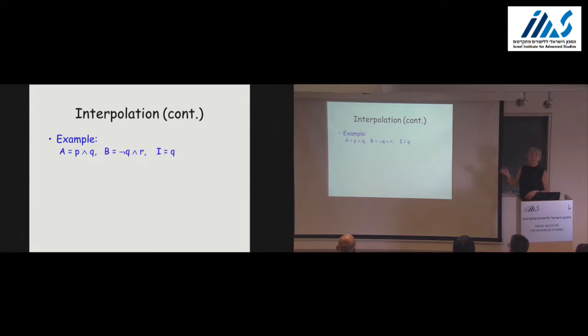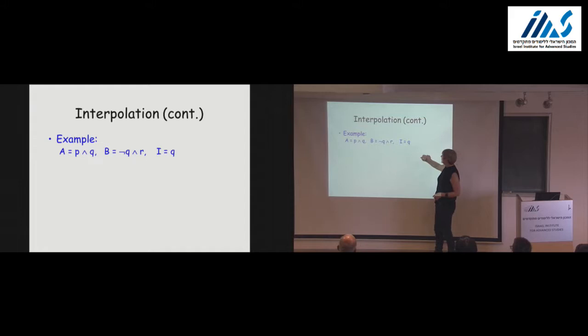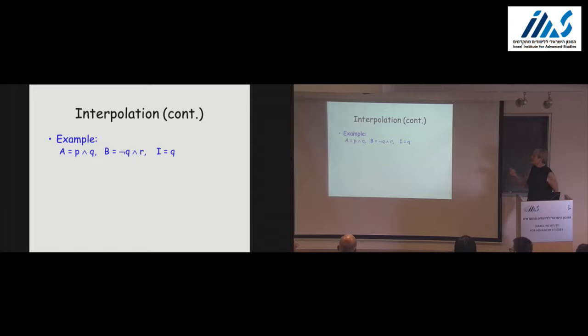Here is an example: if A is P∧Q and B is ¬Q∧R, then the interpolant I is Q. Notice that A implies Q, that Q∧B is false, and that Q is over the common alphabet {Q}. This exactly gives the intuition that the interpolant explains why A and B cannot go together, but in a very limited, concise way.